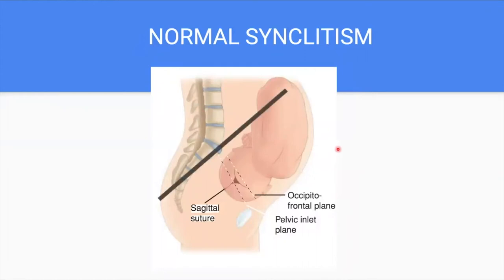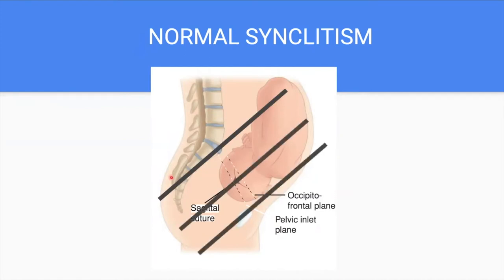If we try to draw a line, just like what's shown in the first slide, it would be parallel. They are parallel to each other with almost equal distances between each other. This is normal synclitism, and it is important because it is more favorable so that the baby can be delivered spontaneously without any difficulties during labor.